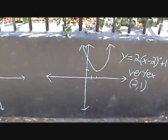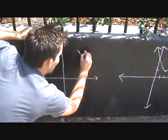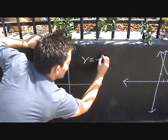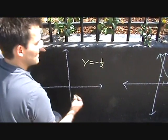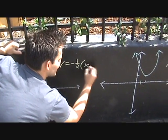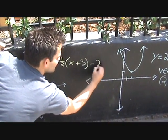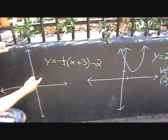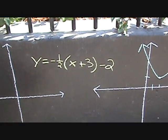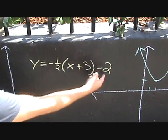Let's do one more example. How about y equals negative one-half times the quantity x plus 3 squared minus 2. Now in this graph, we can see that the vertex is at negative 3, negative 2.